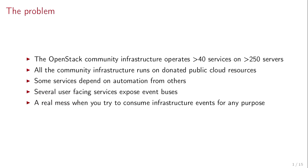All of those servers are donated public cloud resources from various vendors of the OpenStack Foundation. Some of these services depend on automation from other services — things that listen to a Gerrit event stream and do stuff based on that. Some services have end user facing event streams people can listen to. If you're trying to navigate this mess of 40 to 50 services trying to figure out what's going on, you really have no way to solve it — each individual service has its own thing. This isn't a unique problem. The Fedora community infrastructure introduced FedMessage to do the same thing, but the problem we had with FedMessage was it was based on ZeroMQ, and we'd been having issues with scaling and network reliability because we're on a public cloud, and one thing they're not is reliable.